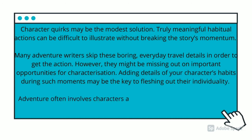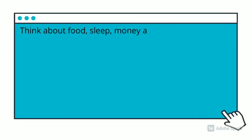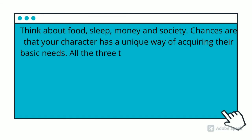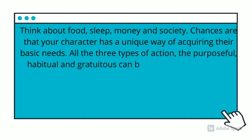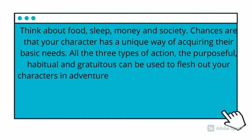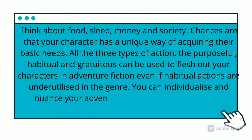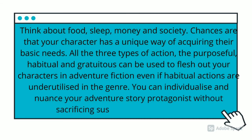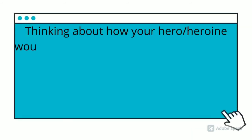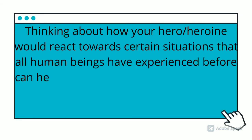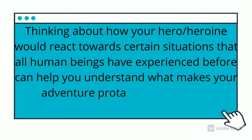Adventure often involves characters attempting to secure the basic needs for survival. Think about food, sleep, and shelter. Chances are that your character has a unique way of acquiring their basic needs. All three types of action — purposeful, habitual, and gratuitous — can be used to flesh out your characters in adventure fiction, even if habitual actions are underutilized in the genre. You can individualize your adventure story protagonist without sacrificing suspense and momentum. Thinking about how your hero would react to situations that all human beings have experienced before can help you understand what makes your protagonist a distinguished individual.